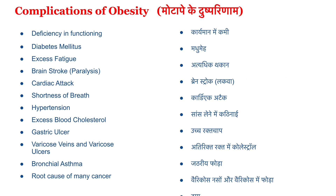Moving towards the complications of obesity — there are several complications that appear because of obesity. These include deficiency in functioning, where organ or limb functioning potential gets impacted. Diabetes mellitus leads to insulin resistance and elevated blood sugar, further leading to a diabetic condition. Excess fatigue occurs because of lack of sleep — we can't recover our body, the biological clock is disturbed, and the fatigue condition that was there earlier will remain largely the next day as well.